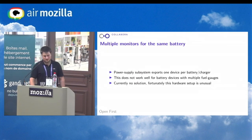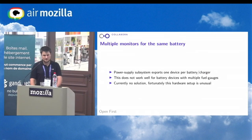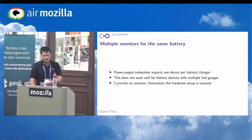One shortcoming is that there's currently no way to have multiple fuel gauges for the same battery. This is fortunately not used often in hardware setups — so far I've only had one system where just one of the fuel gauges was exposed. If you expose both fuel gauges for the same battery, user space assumes that there are two batteries installed, and at the moment there's no good way to expose this kind of setup. If somebody has ideas, please contact me and we will try to integrate this.